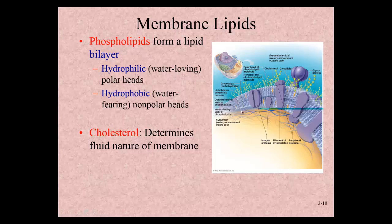Water-soluble substances like salts, sugars, and proteins need to go through a transporter — here's an example of a protein channel specific to a water-soluble substance that allows it to pass through the membrane either in or out of the cell. Another important structure in the plasma membrane is cholesterol, embedded in the fatty, nonpolar region. Cholesterol provides integrity or stiffness to the membrane, so it stays intact and doesn't completely break apart when bumped.